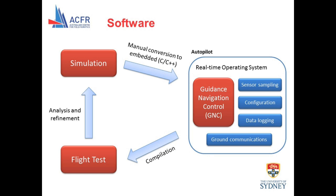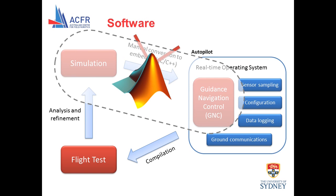Now this is where Simulink earns its licensing fees. Simulink negates these issues by combining simulation, code generation, and algorithm validation in a single streamlined step. Not only is embedded code automatically generated with a single click, but all algorithm development and testing can occur in a high-level graphical environment. Simulink reduces a time-consuming, tedious, and error-prone process to just a few mouse clicks.